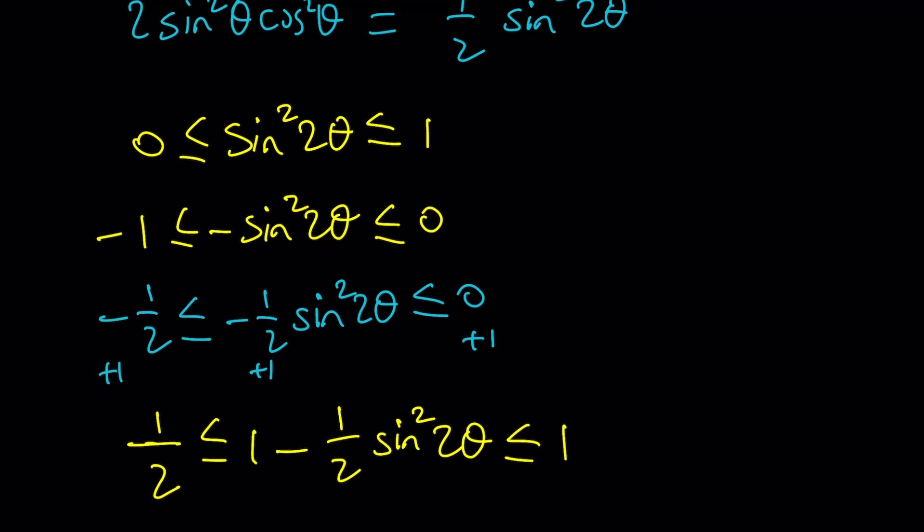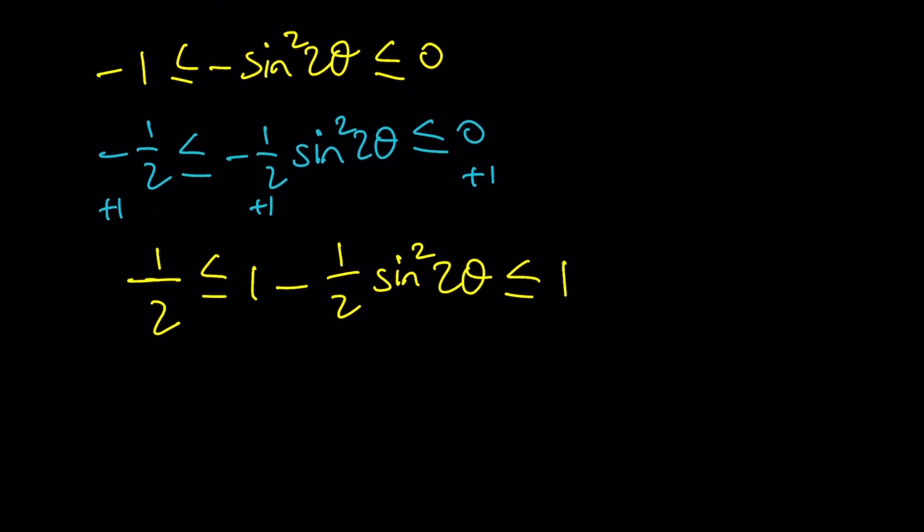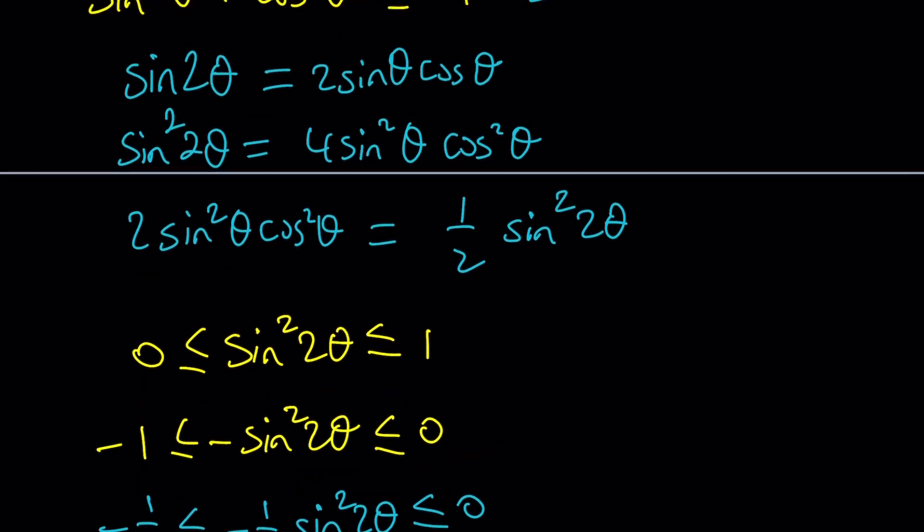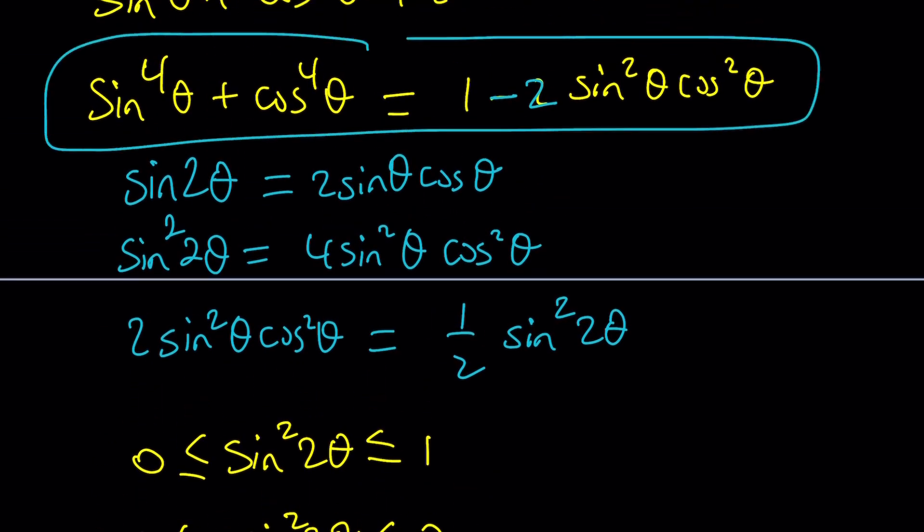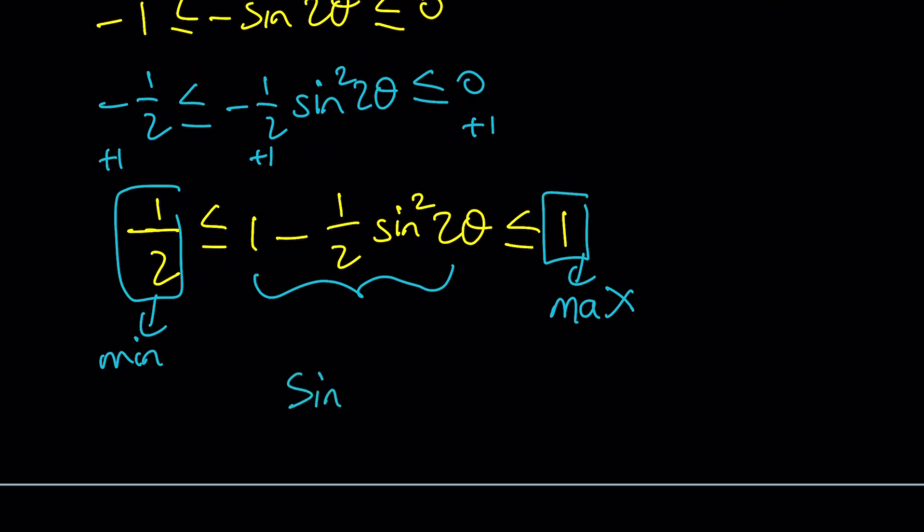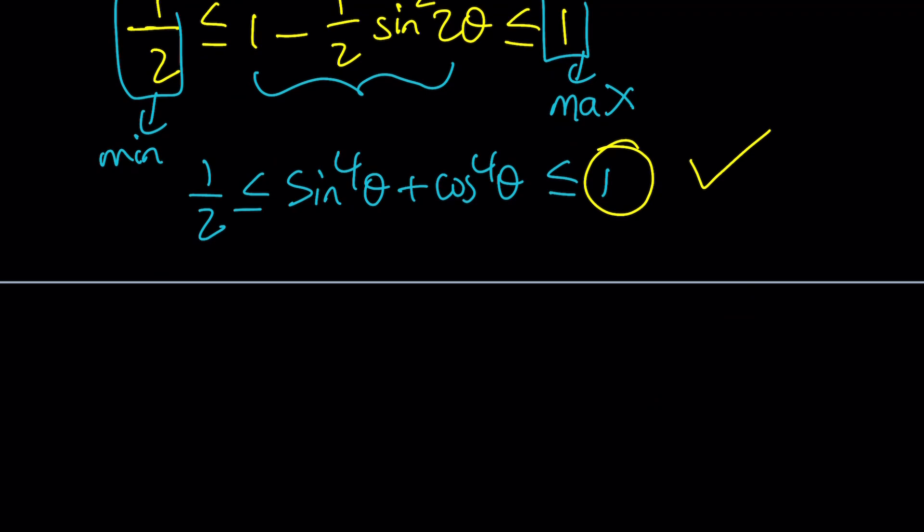And guess what? These give you actually two questions that are answered at the same time. This gives you the minimum value, and this gives you the maximum value we were looking for. And what is this equal to? 1 - ½sin²2θ is equal to the sum of the fourth powers. So in other words, we found that sin⁴θ + cos⁴θ is between ½ and 1, and this is pretty strict, so the maximum value we're looking for is actually 1. And you may think about how is this value attained?